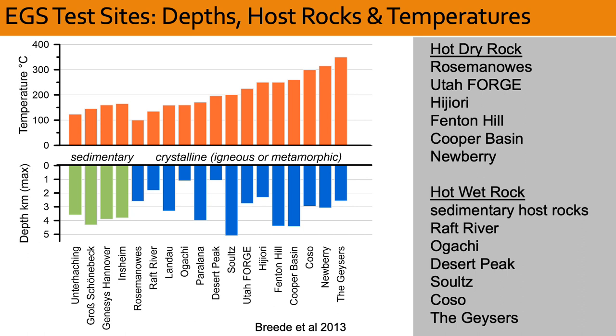The ones in crystalline rocks, having an igneous or metamorphic origin, are represented by the blue-filled bars on the right, with drill depths of one to five kilometers and reservoir temperatures between 100 and 350 degrees Celsius. It is quite evident that a wide range of circumstances have and continue to be investigated, with about half representing hot, dry rock environments and the other half representing hot, wet rock environments.